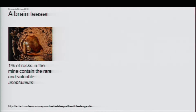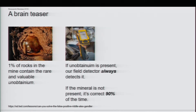Let's start with a brain teaser. I have a mine, and 1% of the rocks in this mine are a rare and valuable mineral: unobtainium. I have a detector, and if unobtainium is present, my detector is perfect — it always detects the unobtainium. But if it's not there, I get a false positive 90% of the time.